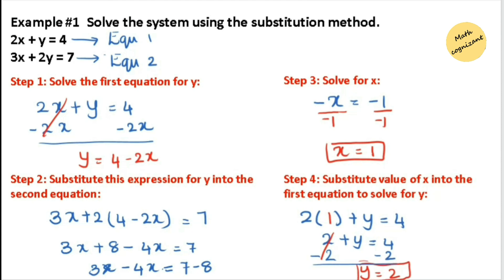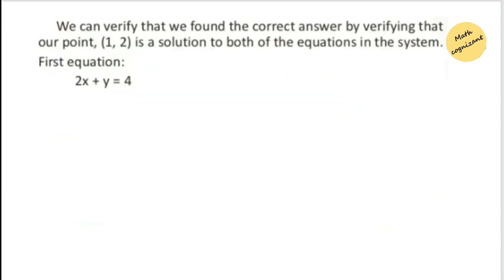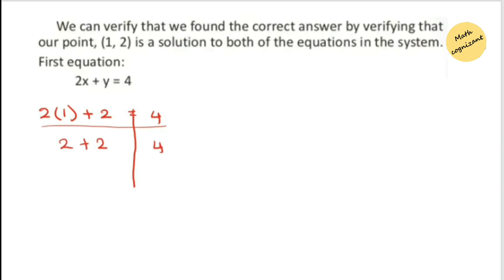The next step is to verify that the solution (1, 2) satisfies both equations. Let's substitute into equation 1: x equals 1 and y equals 2, so 2 times 1 is 2, plus 2 equals 4 on the left-hand side, and 4 is the constant on the right side. Both sides are equal, so the solution satisfies equation 1. Let's check equation 2.